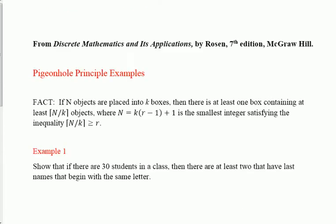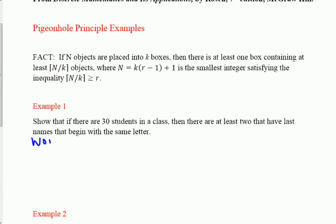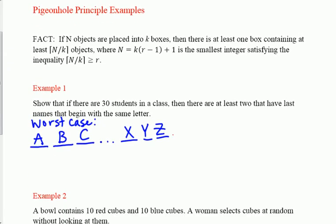The worst-case scenario method says that you're really unlucky when you choose people, so you don't get to prove this quickly. I'm talking to people at random, asking them what their last name begins with. Because I'm unlucky, the first person I talked to has a last name that begins with A, the second one has B, the third person has C, and I keep going all the way to X, Y, and Z.